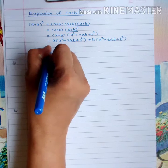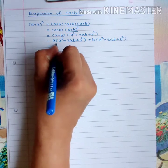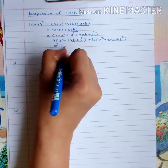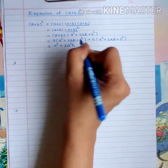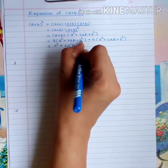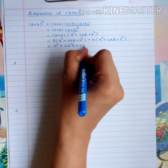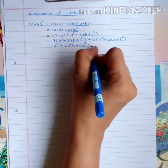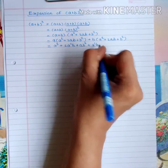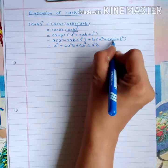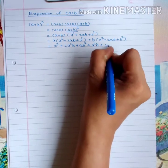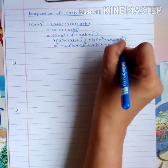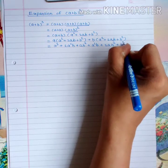So a × a² = a³. Then a × 2ab = 2a²b. Then a × b² = ab². Then b × a² = a²b. Then b × 2ab = 2ab². And b × b² = b³.